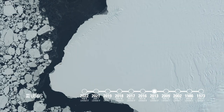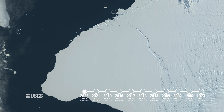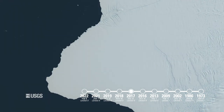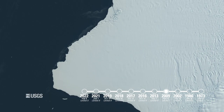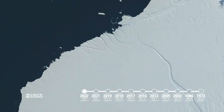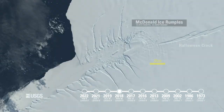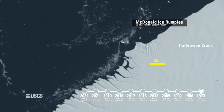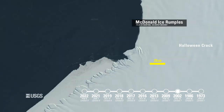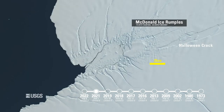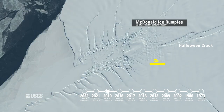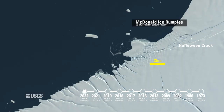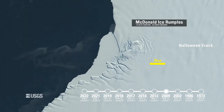Now Landsat 9 has joined in observing the changing surface. Major rifts have formed near a distinctive feature called the McDonald Ice Rumples. Ice rumples form when a rocky formation on the seabed impedes the flow of ice, causing pressure waves, crevasses, and rifts to form.